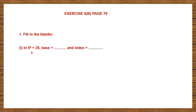First one: in 5 raised to the power of 2 equals 25, base is equal to dash and index is equal to dash. So which is the base and which is the index? The base is 5 and the index or the exponent is the number that is raised to a power, that is 2. So the base is 5 and the index or the exponent is 2, that is the power.